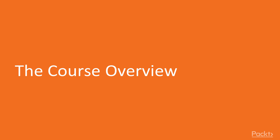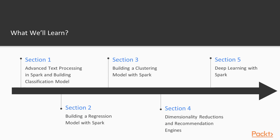Let's see what we will learn throughout this course. First, we will start with advanced text processing in Spark and build a classification model. Next, we will be building a regression model with Spark. In the third section, we will be building a clustering model with Spark and also measuring accuracy using the AUC under ROC metrics.